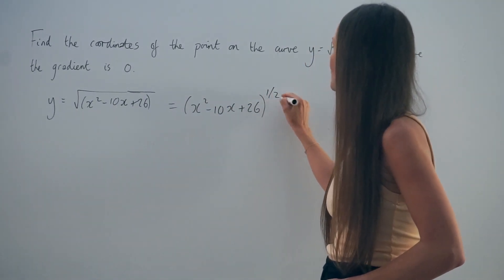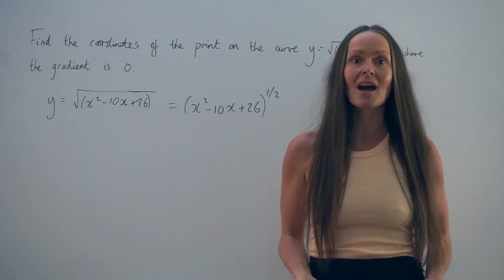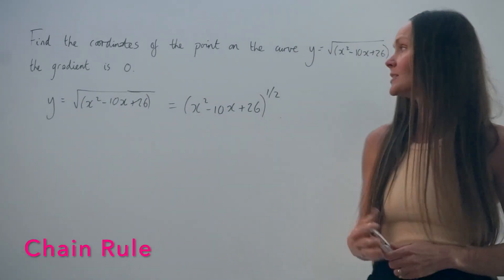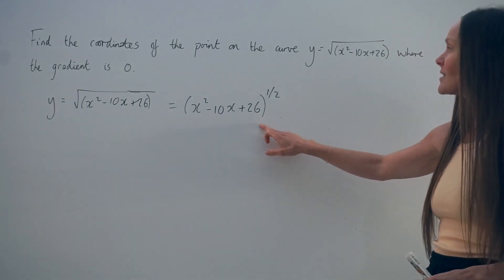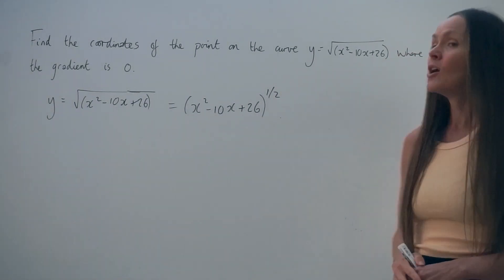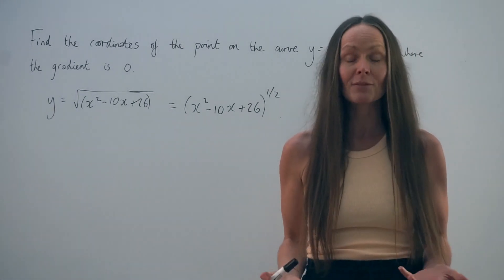But rewriting it this way makes it more obvious that I need to use the chain rule to differentiate. Remember when you have an expression with x inside brackets and a power outside the brackets, we need to use the chain rule to differentiate.